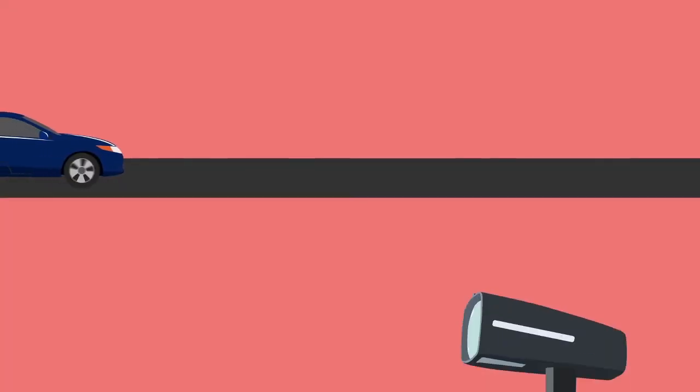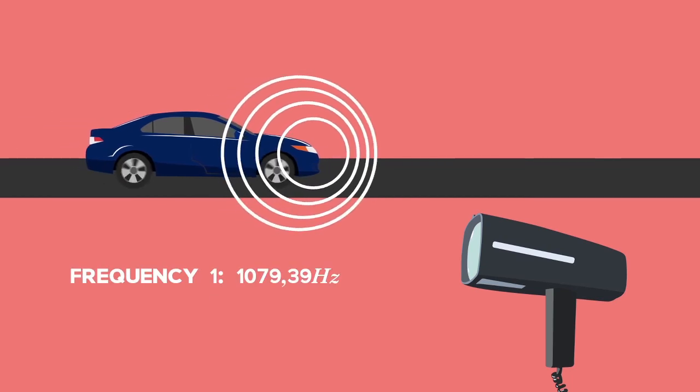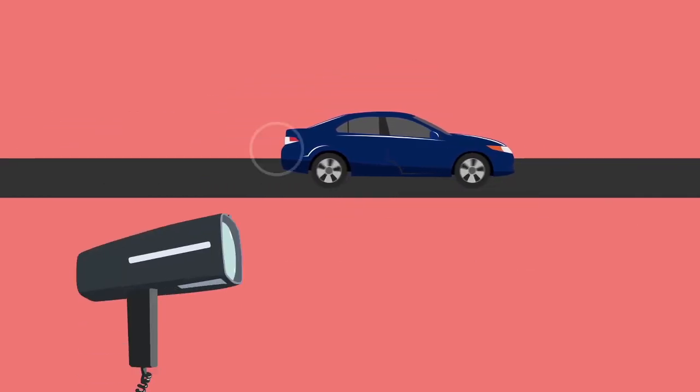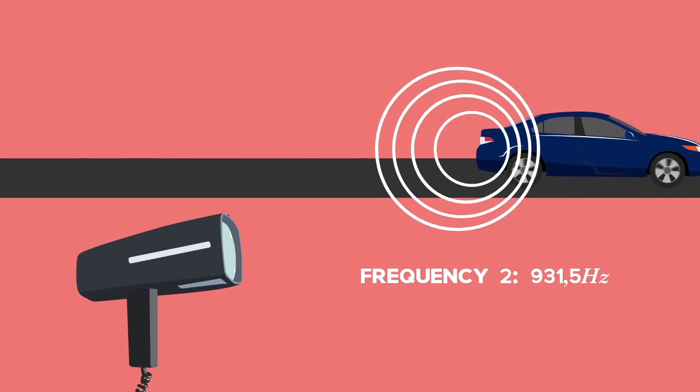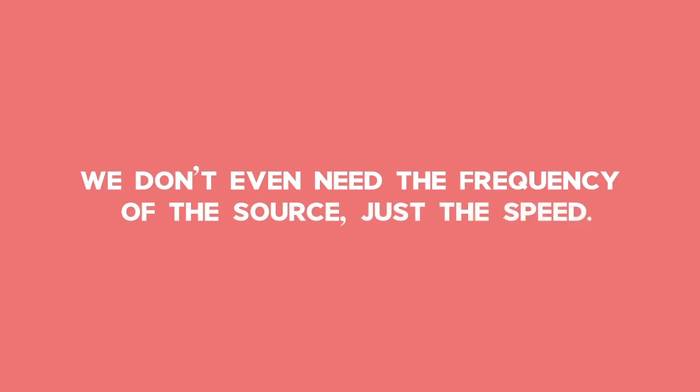Try to imagine how you might solve a question with two unknown variables and two different scenarios. If you guessed, we might use simultaneous equations to find these two variables. Oddly, we don't even need the frequency of the source, just the speed.